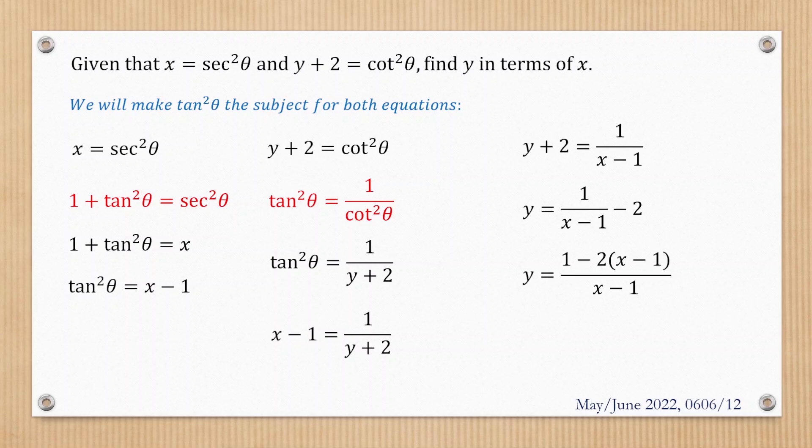We'll make x minus 1 the common denominator. When we expand the numerator, we get 3 minus 2x, and the denominator is x minus 1. This is our final answer: y equals (3 - 2x)/(x - 1). Thanks for watching.